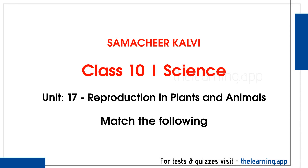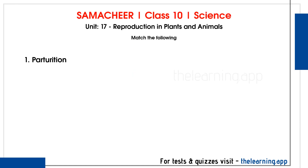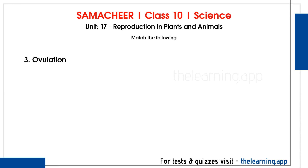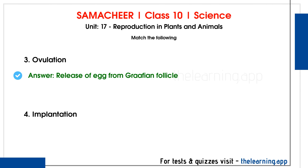Next match the following on delivery-related terms. First: parturition — delivery of baby from uterus. Second: gestation — duration between pregnancy and birth, which is 9 months. Third: ovulation — release of egg from Graafian follicle. Fourth: implantation — attachment of zygote to endometrium.